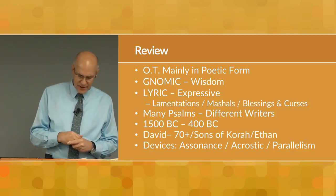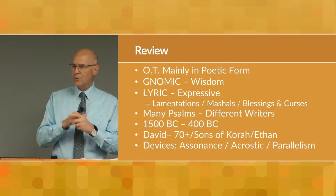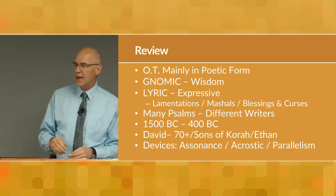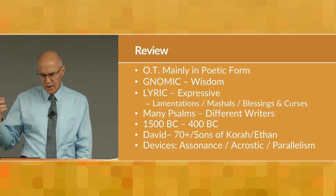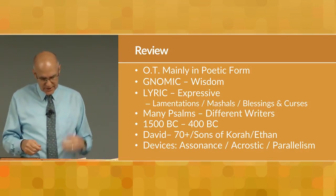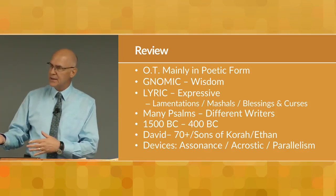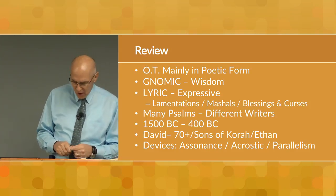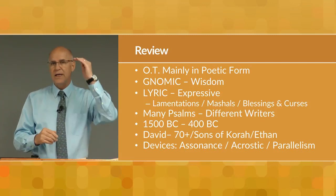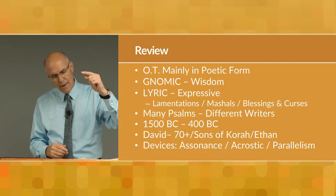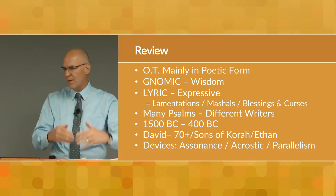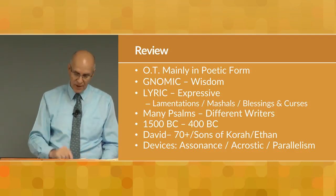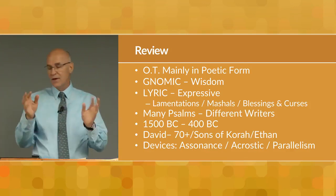Last week we studied the characteristics of the poetry of the psalms — the literary devices that make them unique as poetry. For example, we looked at the device called assonance, where similar sounding words with different meanings were used to highlight or contrast ideas. We talked about acrostics — a poem where each successive line used a successive letter of the Hebrew alphabet. The Hebrew alphabet has 22 letters, so you'd have a poem with 22 lines, each beginning with a successive letter. They used that very imaginatively.